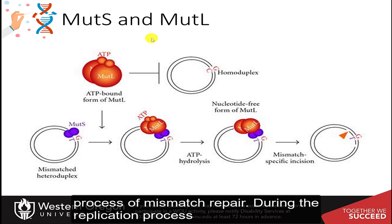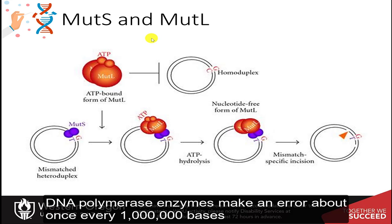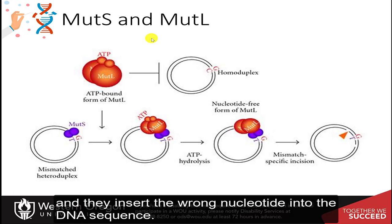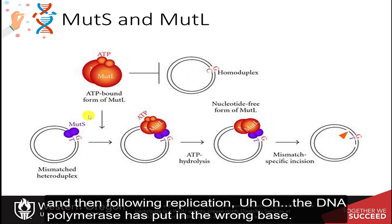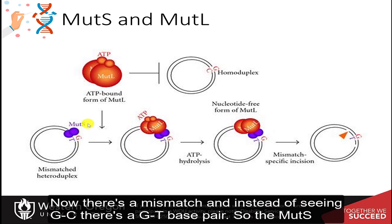During the replication process, DNA polymerase enzymes make an error about once every million bases and insert the wrong nucleotide into the DNA sequence. So here you can see that the normal DNA sequence contains a GC pair right here, and then following replication, the DNA polymerase has put in the wrong base. Now there's a mismatch — instead of seeing GC, there's a GT base pair.